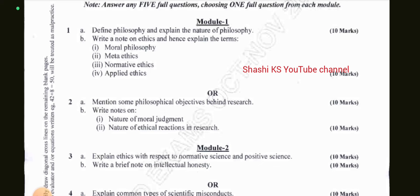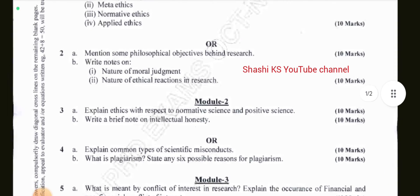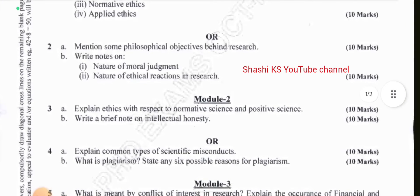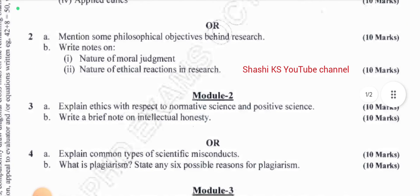In Module 2: explain ethics with respect to normative science and positive science; write a brief note on intellectual honesty. The or-choice in Module 2 was: explain common types of scientific misconducts; what is plagiarism, and state any possible six reasons for plagiarism.